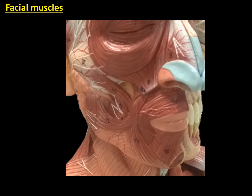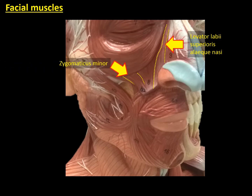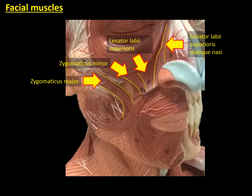Let's focus now on the oral group. In the medial part, we can observe the levator labii superioris alaeque nasi, which is making a V shape together with the zygomaticus minor. In between both of them, we can observe the levator labii superioris. There is also a zygomaticus major lateral to the zygomaticus minor, and in between both zygomaticus muscles, we can observe the canine muscle in a deeper plane, which is closer to the bone.